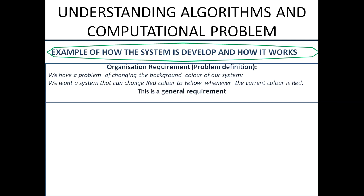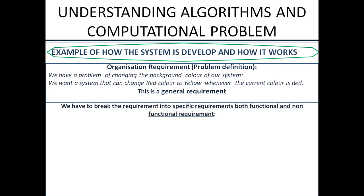As engineers, we know this is a general requirement — this is what is called the complex system, the real-world problem we want to solve. When you are faced with a situation like this as a software engineer and you know what you're really doing, you start questioning yourself about what to do next, rather than just jumping into programming and trying different programming languages.